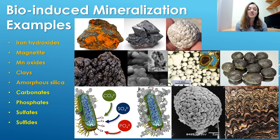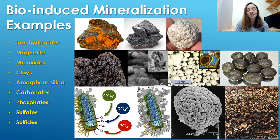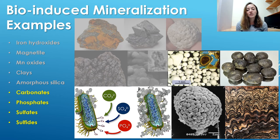There are many examples of minerals that form by biologically induced mineralization, including iron hydroxides, magnetite, manganese oxides, clays, amorphous silica, carbonates, phosphates, sulfates, and sulfides. We are talking today about those last four examples because we talked about the first five in the previous video — the part two biomineralization video. I'll link it up here if you want to check that out.